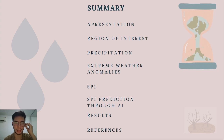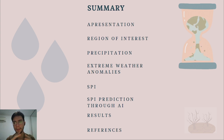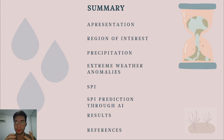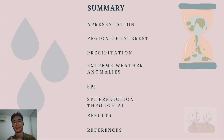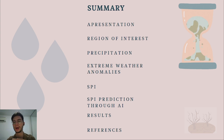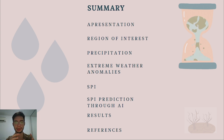First, I will show you my summary. I will start with the presentation and show you the whole idea. After this, I will show you the region of interest — the whole country of Brazil. I will talk about precipitation, its definition, its importance in the hydrological cycle, and define some extreme weather anomalies. Then I will show some definitions of the Standardized Precipitation Index, try to predict the SPI through artificial intelligence libraries, and analyze the results.